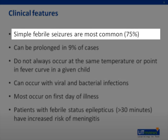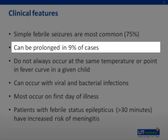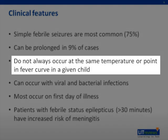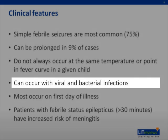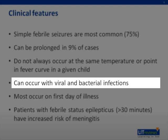Simple febrile seizures are the most common type and typically account for about 75% of cases. Complex febrile seizures are more unusual, with seizures found to be prolonged in about 9% of cases and focal in less than 5% of cases. Seizures do not always occur at the same temperature or point in a fever curve, even for a given child. Febrile seizures can occur with viral or bacterial infections, though there is an increased risk specifically with HHV-6 infection, as evidenced by a febrile seizure rate of 13% in one study.